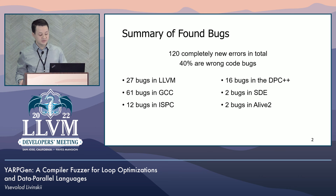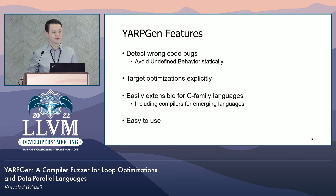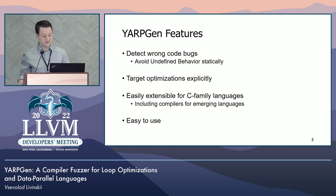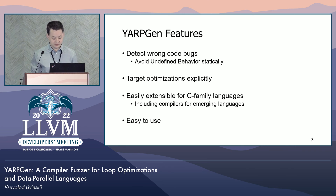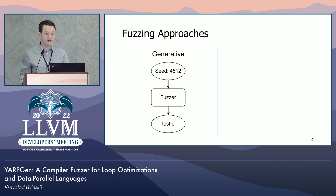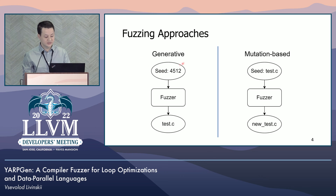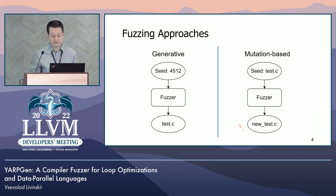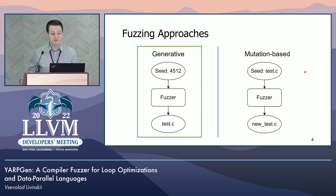There are several features that make YARP Gen so effective. We wanted it to be able to detect wrong code bugs in loop optimizations and data parallel languages derived from C. It also comes with an automated testing system, which makes it easy to use. Before discussing each feature in detail, let me give a quick background overview. The main idea of random testing is to automatically produce a large number of tests to detect bugs. There are two main approaches to fuzzing: generative and mutation-based. The generative approach requires no external input and produces a new test from scratch for every new seed. Mutation-based fuzzing requires an input corpus and produces new tests by altering existing ones. We implemented YARP Gen as a generative fuzzer because it aligned better with our goals.